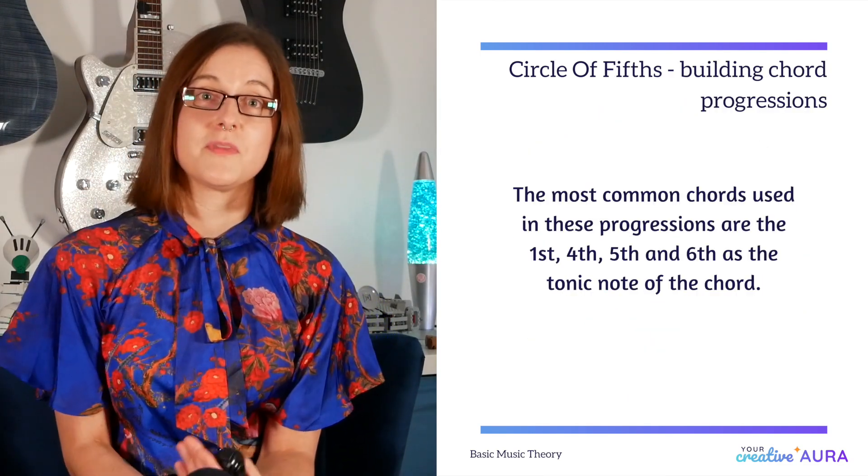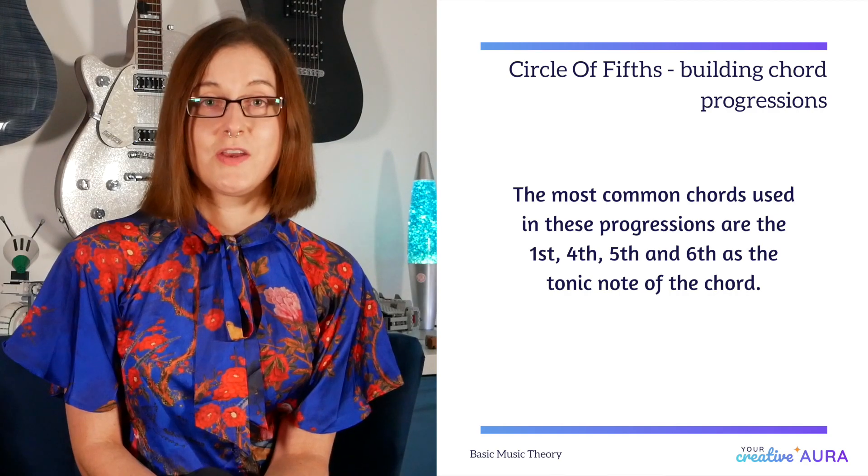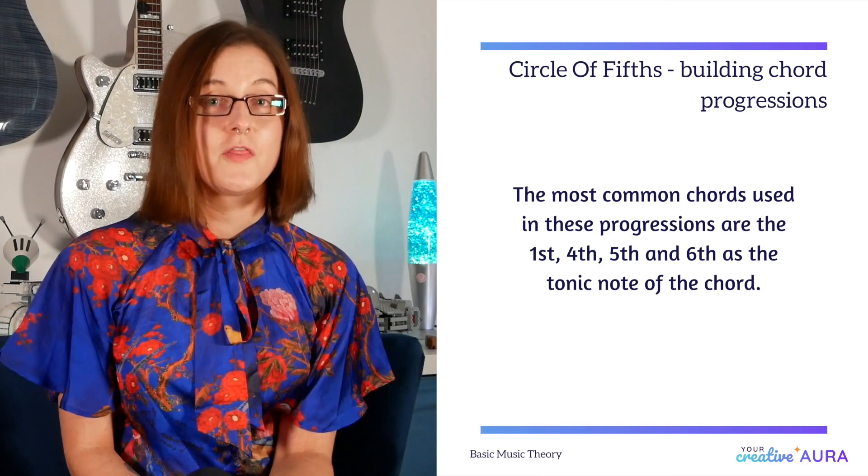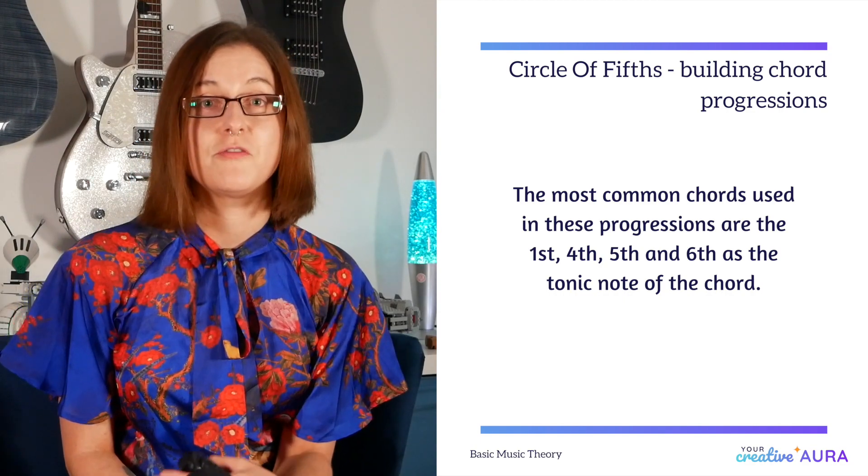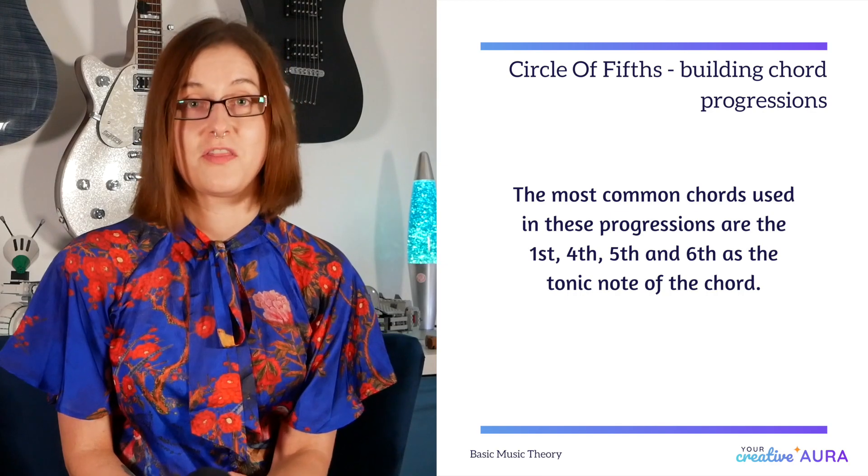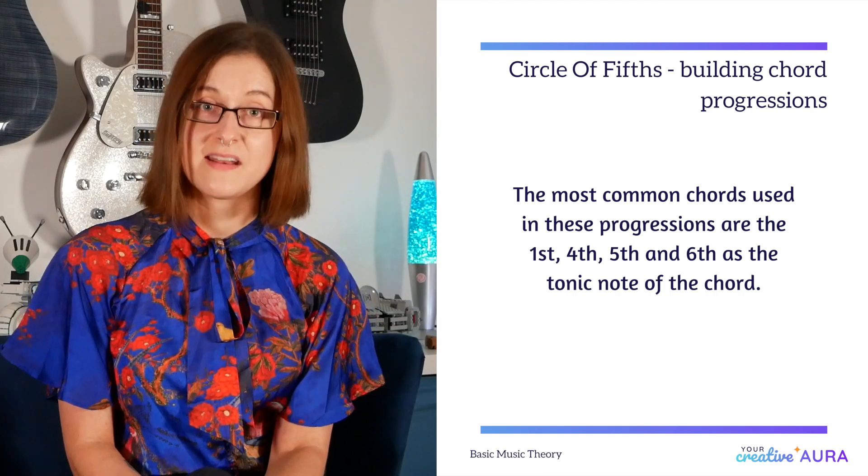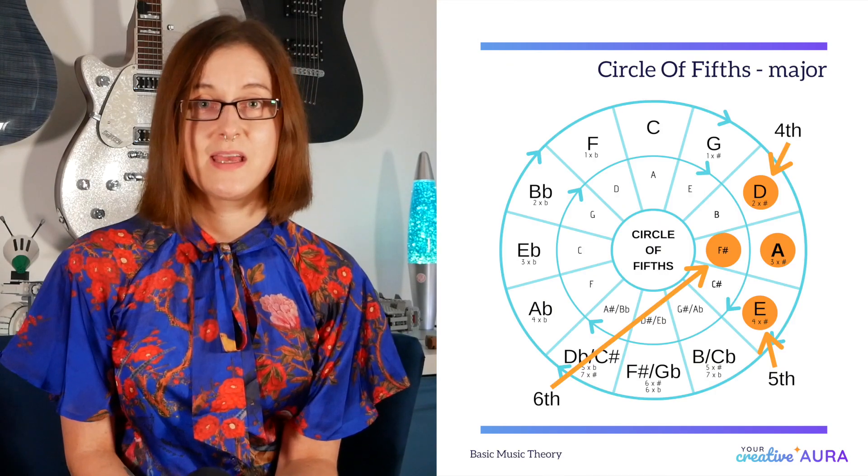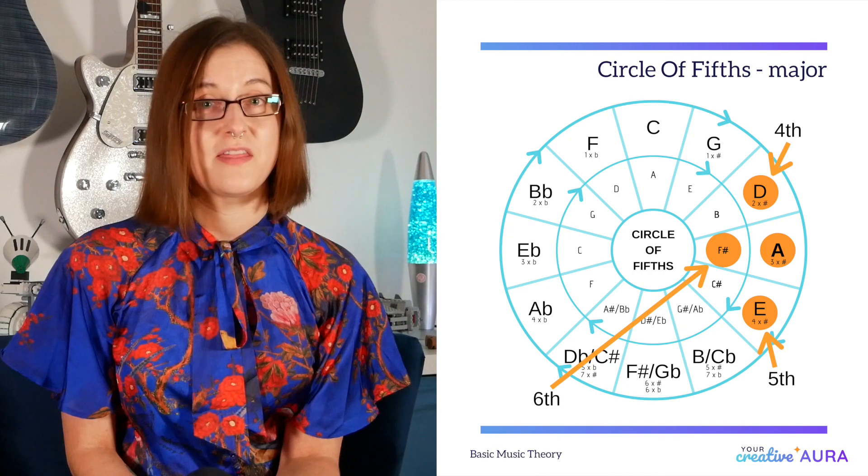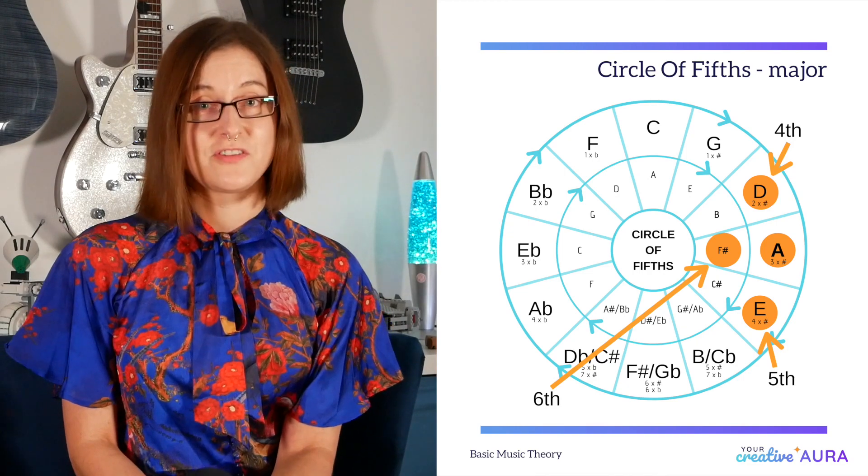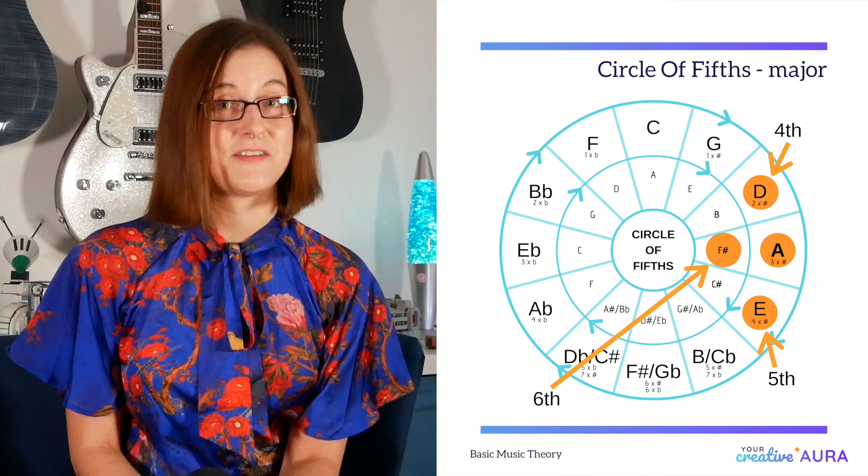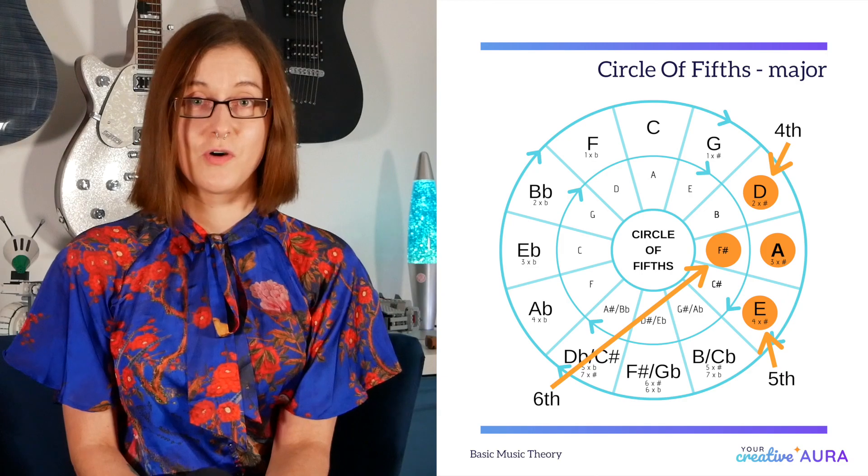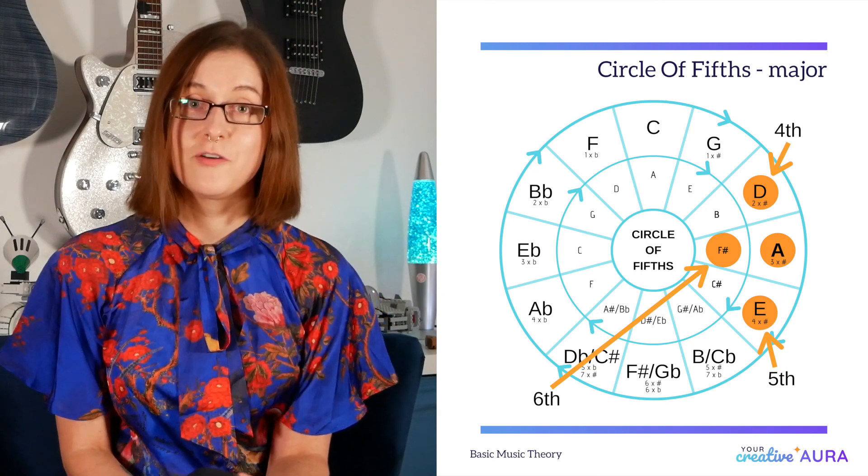We can also find chord progressions. You can use the circle of fifths to build a chord progression. The most common chord progressions involve the first, the fourth, the fifth and the sixth notes in a major or minor scale. Our example is the key of A major, along with the fourth, fifth and sixth notes. For major scales, our fifth chord is in front, our fourth chord is behind, and our sixth chord is our relative minor from the inner circle.